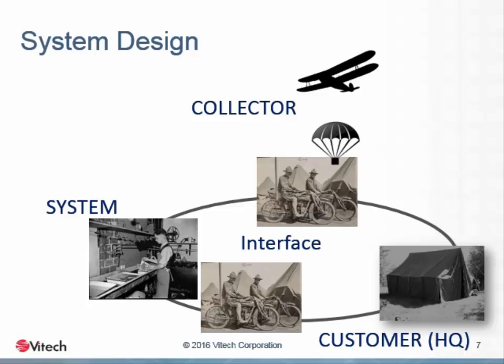The operation of the system is depicted here. Biplanes return with the images, drop them to the motorcycles that take them for processing, and then convey the finished product to the customer. We have labeled the elements as they will be labeled in the updated system that we will use as our example. The fundamental process of obtaining images, processing them, and conveying them to the customers will remain substantially the same.